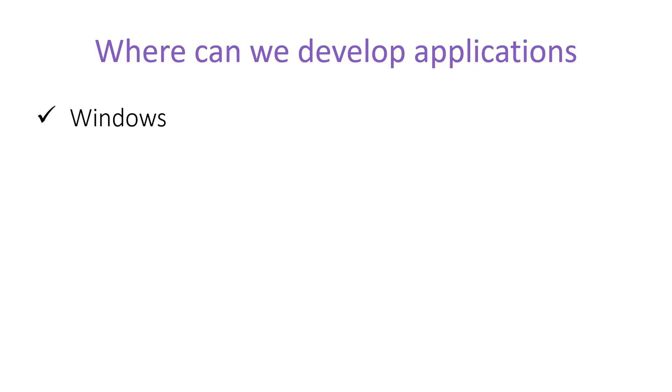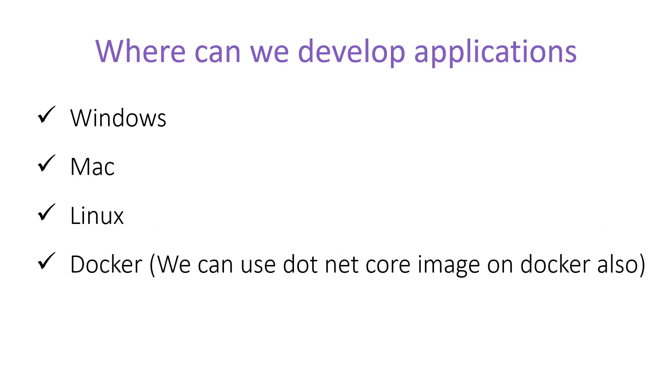Since we have to develop applications in the .NET Core framework, let's understand where we can develop .NET Core applications. .NET Core is a cross-platform framework, so we can use several types of machines for development. We can use Windows, Mac, Linux, and Docker. The .NET Core image is also available on Docker. If you are coming from a .NET framework background, you must know that development of .NET framework applications was possible only on Windows.